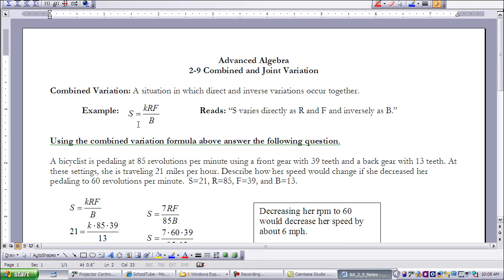So here you have the example S equals K times R times F all over B. And it's read, S varies directly as R and F and inversely as B.